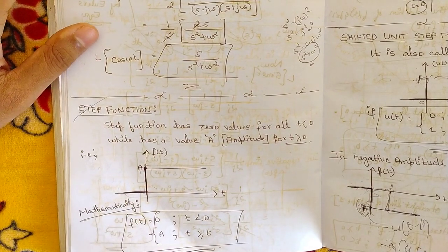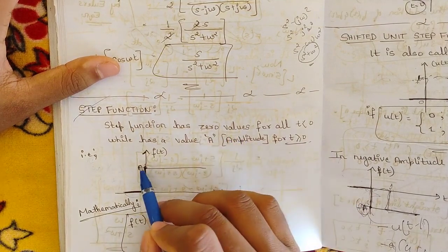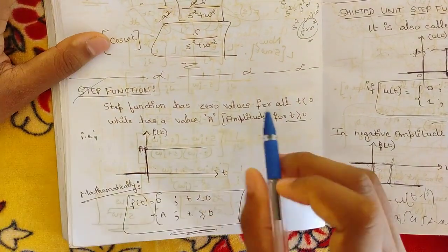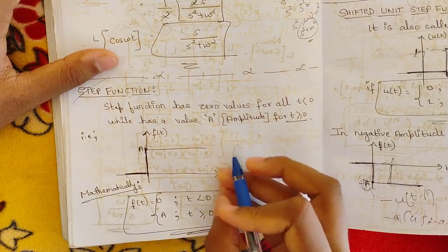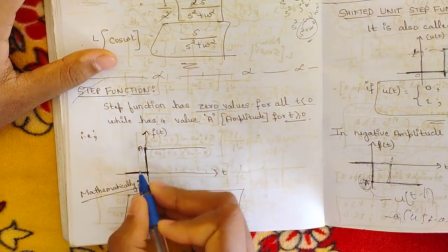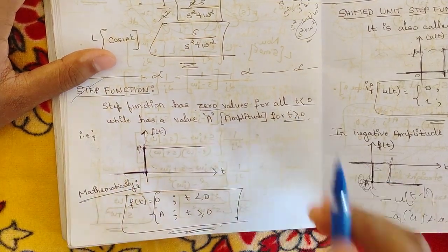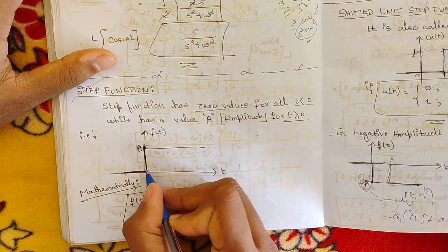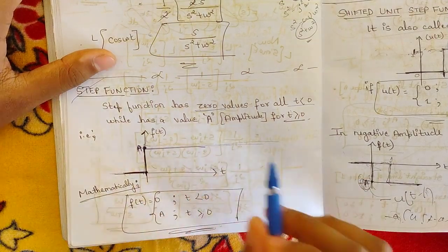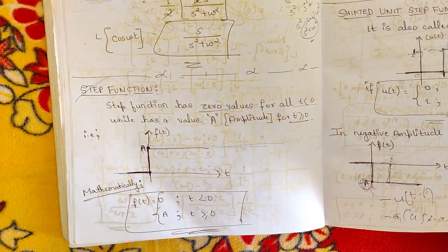Our first function is the step function. A step function has zero value for all t less than zero, while it has a value of A — where A represents the amplitude — for all values of t greater than or equal to zero. Graphically, the function stays at zero for negative t, then jumps to amplitude A and remains constant. Mathematically, f(t) = 0 when t < 0, and f(t) = A when t ≥ 0.